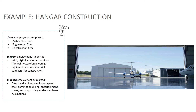Let me give a quick example of how money can flow through the economy, looking at an example of hangar construction. Direct employment may be supported by architectural and engineering firms as well as the firm actually constructing the hangar. Indirect employment can support those services needed at the architectural and engineering firms, such as print, digital, and other services, as well as for the construction firm, and this can include equipment and raw material suppliers.